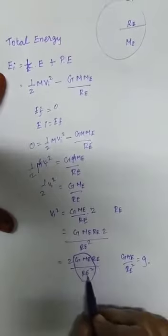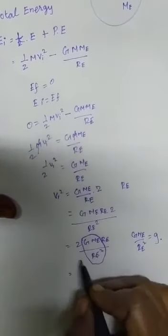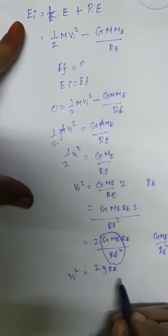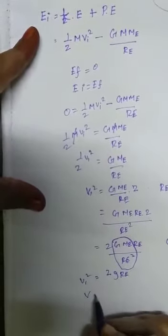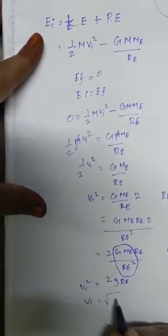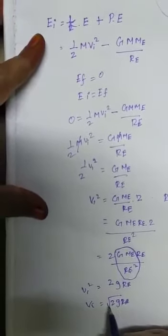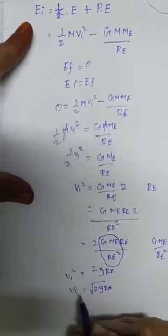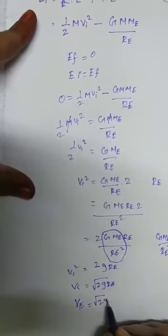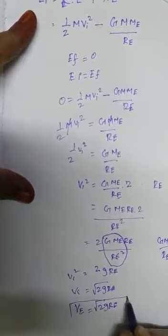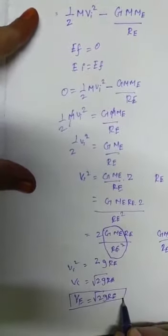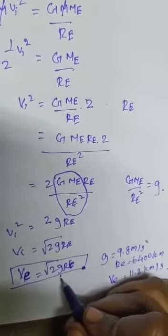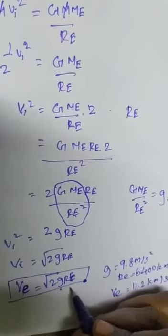Already we know that G M_E divided by R_E squared equals small g. Substituting this value, 2 G M_E divided by R_E squared becomes 2 g R_E. Instead of V_I we use V_E. Because that is escape velocity, denoted by V_E, which equals the square root of 2 g R_E. So this is the escape speed of the object. This equation shows that escape speed depends on only two factors: acceleration due to gravity g and the radius of the Earth R_E.